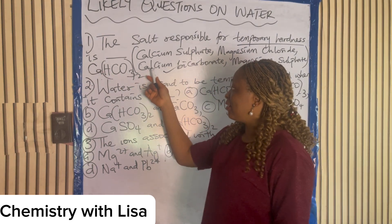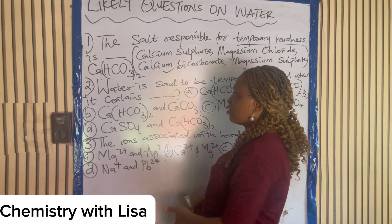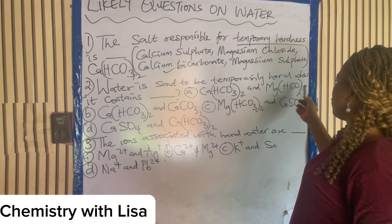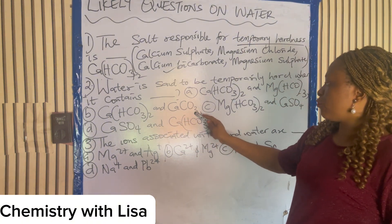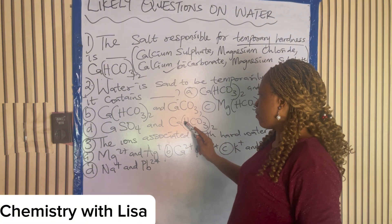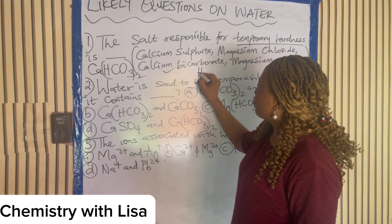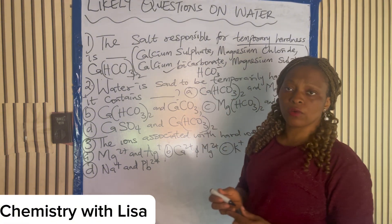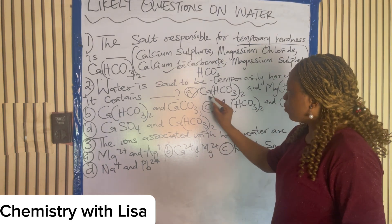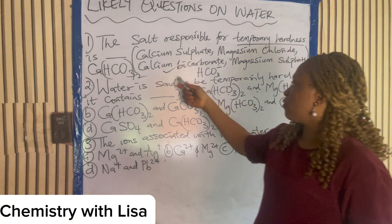Next: water is said to be temporarily hard when it contains what? The options are: calcium carbonate and magnesium hydrogen carbonate, or calcium hydrogen carbonate and calcium carbonate. When water is temporarily hard, it contains hydrogen carbonate — whether calcium hydrogen carbonate or magnesium hydrogen carbonate. The correct answer is A. Another name for these is calcium bicarbonate or magnesium bicarbonate, but that is actually an old name.